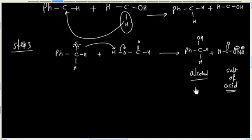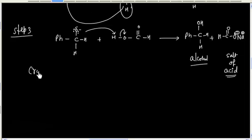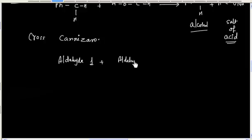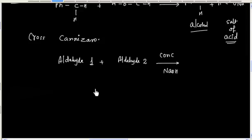This reaction is also called a Cross-Cannizzaro reaction. When we have two different aldehydes — aldehyde of type 1 and aldehyde of type 2 — treated with concentrated NaOH, this reaction is called a Cross-Cannizzaro reaction, as we have two different kinds of aldehyde.